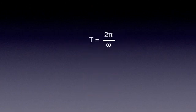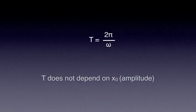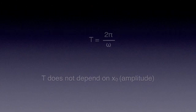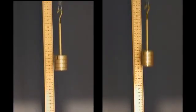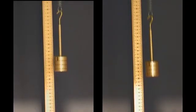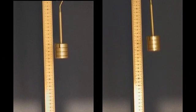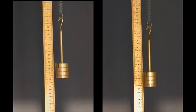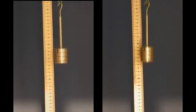It is quite remarkable that the period does not depend on x₀, the amplitude of oscillation. The video on the screen shows the same oscillator oscillating with two different amplitudes, and the periods of the two oscillating motions are the same.